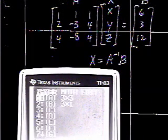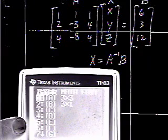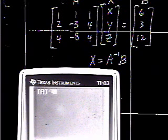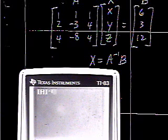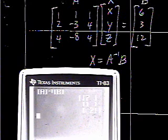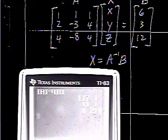Now, we're going to hit the matrix button again, but this time, instead of going to edit, we want to choose matrix A by hitting enter. We want its inverse, so we hit the x to the negative 1 button. And then, matrix again, and this time, matrix B. And when we hit enter, it will spit out the value of x, y, and z as 7, 1, and negative 2.